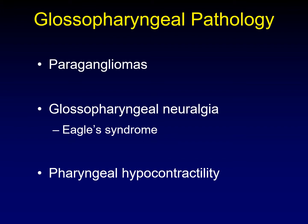Pathology that affects the glossopharyngeal nerve includes paragangliomas, specifically arising from Jacobson's nerve, glossopharyngeal neuralgia, which is often a component of EGLE syndrome, and pharyngeal hypocontractility, which occurs when there is diminished contractility from the visceral motor component of the glossopharyngeal nerve.